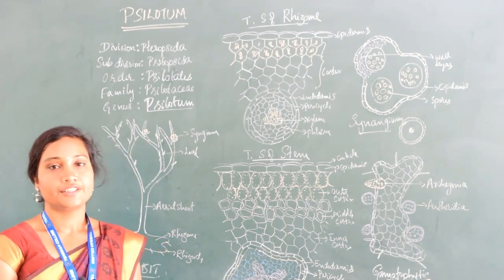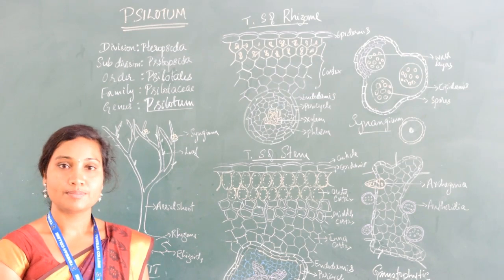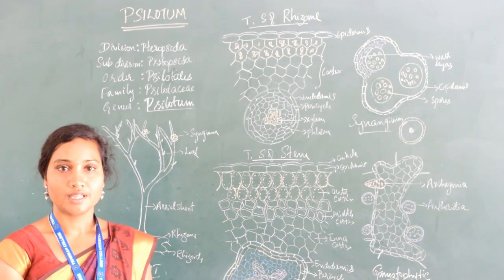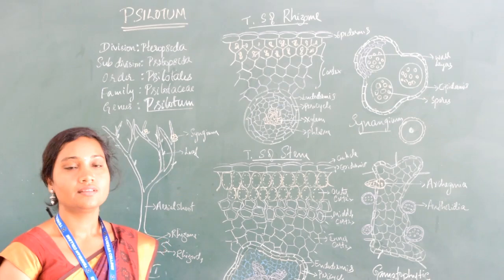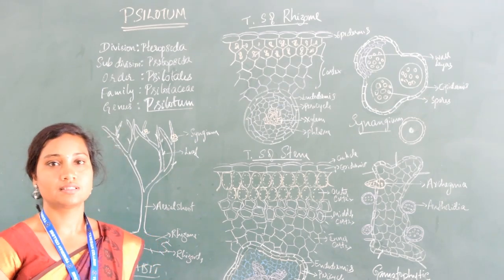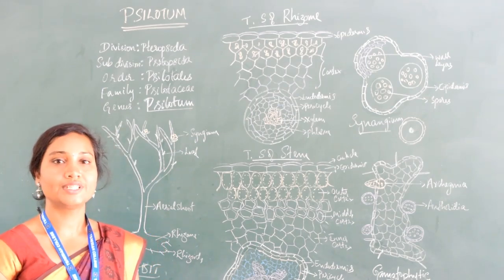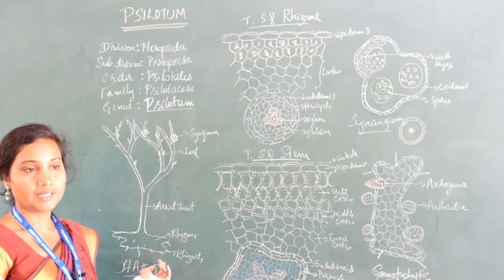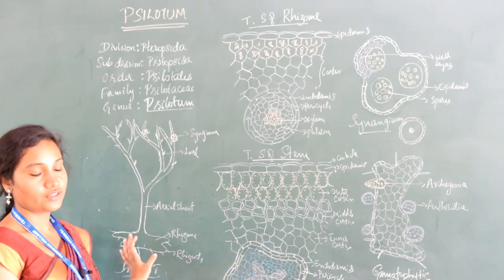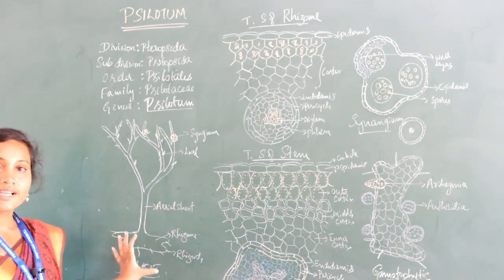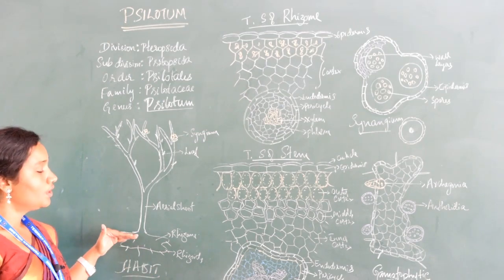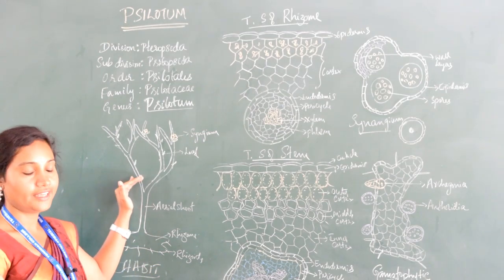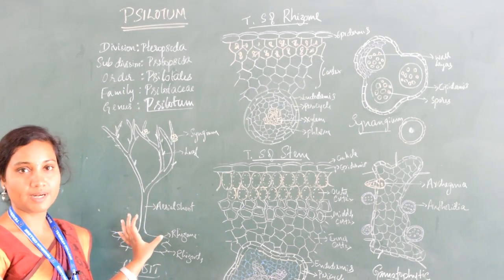Usually in pteridophytes, the sporophytic plant body is dominant over the gametophytic plant body. Here we will start with the morphological structure of the sporophytic plant body of Psylotum. The plant body has been differentiated into an underground rhizome part and the aerial shoot part.